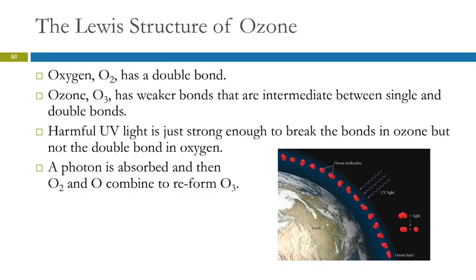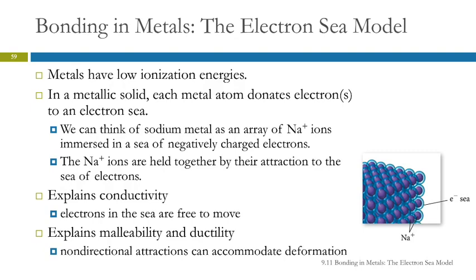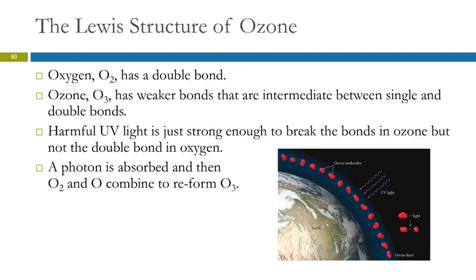Any questions about the electron sea? Let's talk for a minute about ozone. Ozone is important for our planet. Oxygen has a double bond. And ozone, O3, has resonance structures. It has bonds that are between single and double bonds. Let's just draw those Lewis structures.